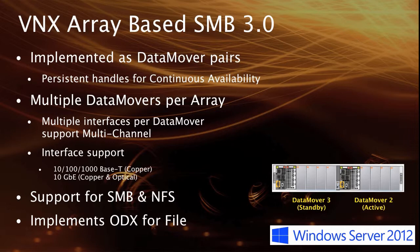On the VNX array — which we're going to be demonstrating very shortly — the way that it's implemented is interesting. Continuous availability is implemented across the data movers in the file portion of the unified platform. It's similar to an appliance-style model. We have two data movers implemented in a VNX unified array: one of them is active and the other is secondary.